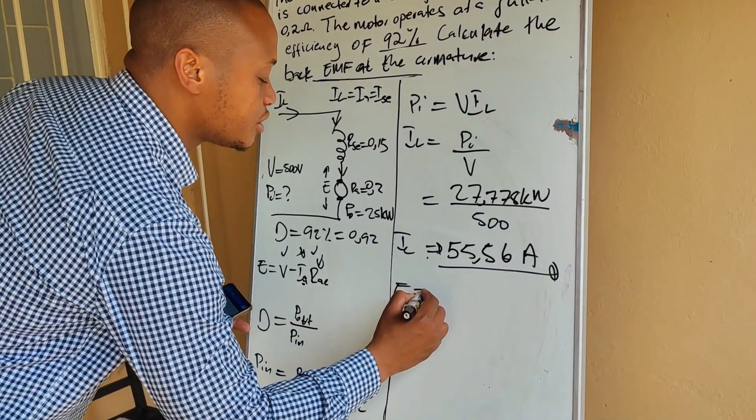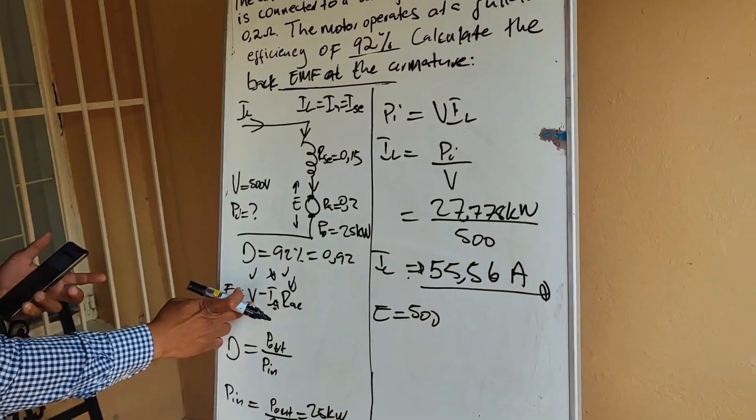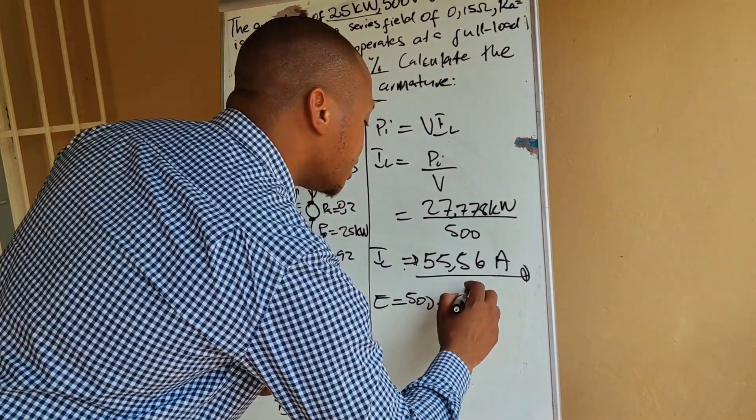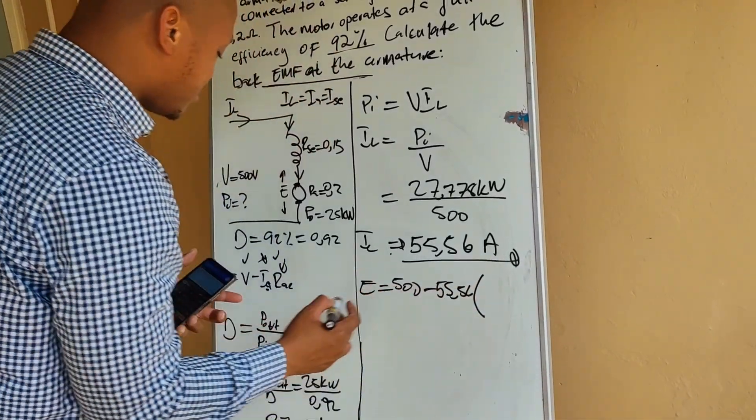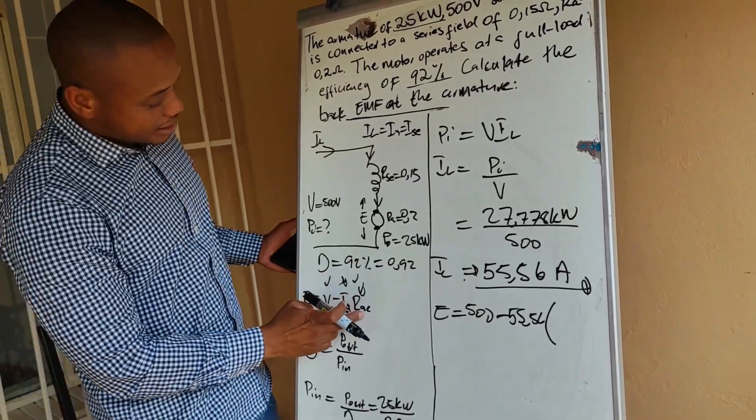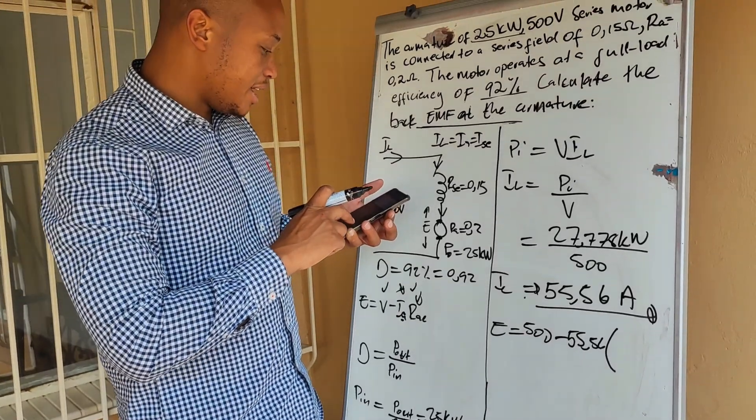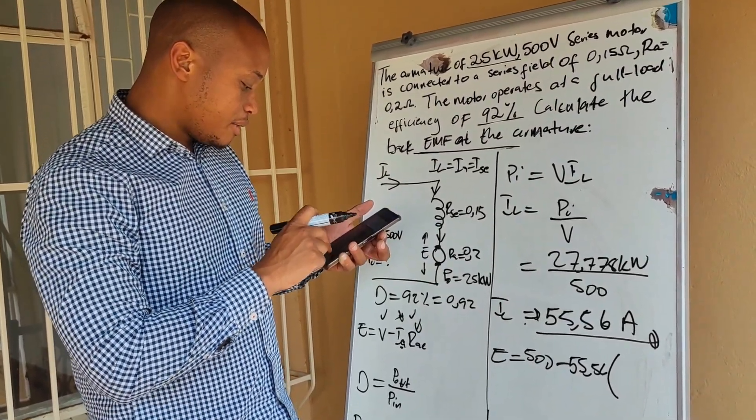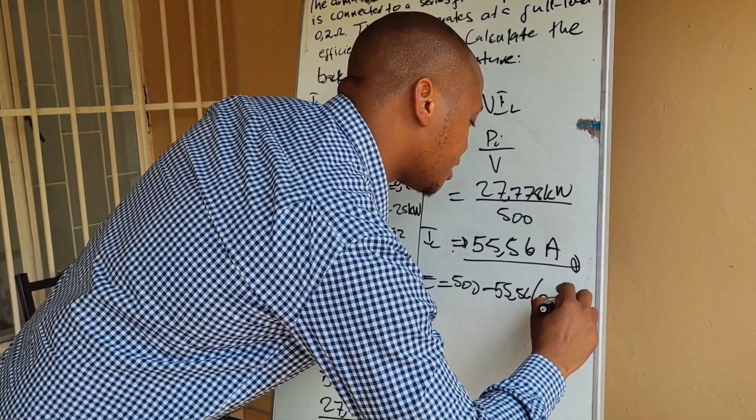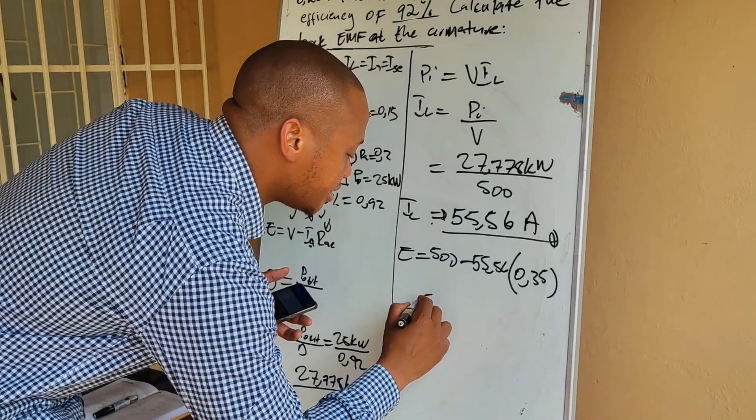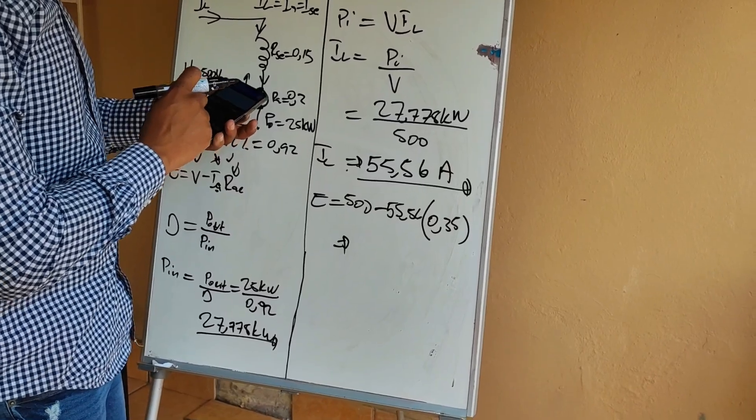So now to calculate the back EMF we say E is equal to V which is 500 minus IA which we calculated as 55.56 multiplied by RAC. RAC is a combination of RSE plus RA. If we add those two together it's 0.15 plus 0.2 which gives you 0.35. And the back EMF will then be equal to 480.55 volts. So that is the value of the back EMF.